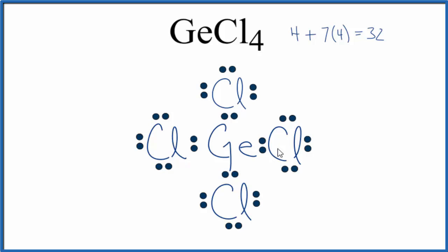and then our central germanium atom, that has an octet as well. If you wanted to know the molecular geometry, you can imagine that these chlorine atoms would all push away from each other, spread out as far away as they could be, and you'd have a tetrahedral molecular geometry, and the bond angles would be about 109.5 degrees.